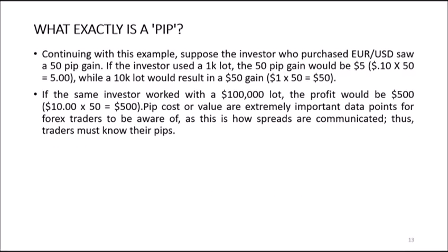Suppose the investor who purchased EUR/USD saw a 50 pip gain. If the investor used a 1,000 lot, the gain would be $5 (that is $0.10 times 50). A 10,000 lot would result in a $50 gain (that is $1 times 50). If the same investor worked with a 100,000 lot, the profit would be $500 (that is $10 times 50). Pip costs or values are extremely important data points for Forex traders, as this is how spreads are communicated. Traders must know their pips, as they are important in both profit making and losses.